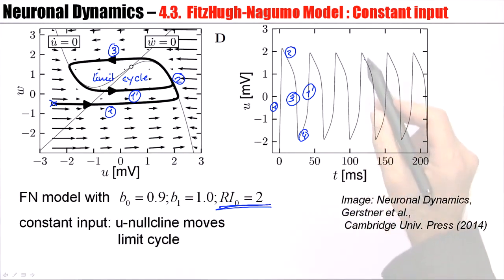So, if we identify each of the pulses as an action potential, then we have here the situation of repetitive firing, periodic firing. And this periodic firing is mathematically described as a limit cycle of my two-dimensional system of equations.